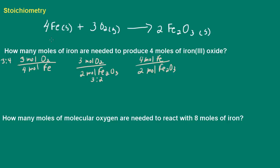We already know if we react four moles of iron, we'll produce two moles of iron-3 oxide. Now, what if I react only two moles of iron — how many moles of iron-3 oxide are we going to produce? I cut this in half, so two moles of iron will give us one mole of iron-3 oxide. If I want to produce four moles of iron-3 oxide, we have a two-to-one ratio — so if I want to produce four moles, I would need eight moles of iron. We can use our stoichiometric ratios for simple calculations we can do in our head.